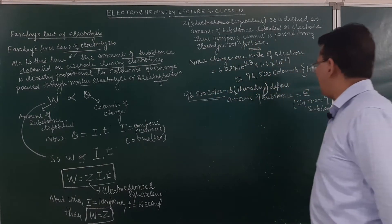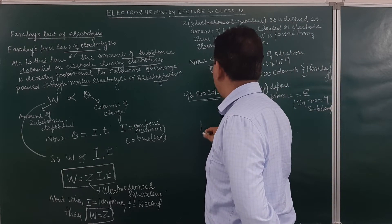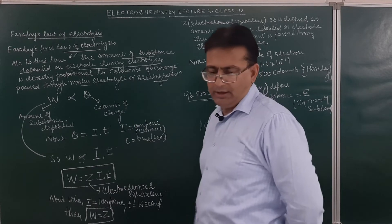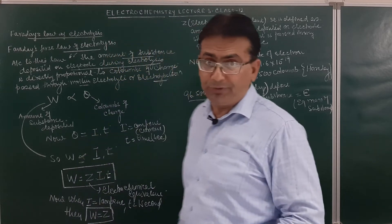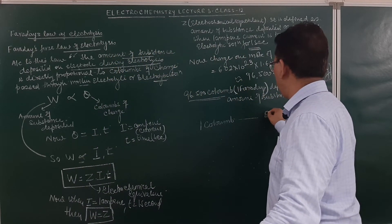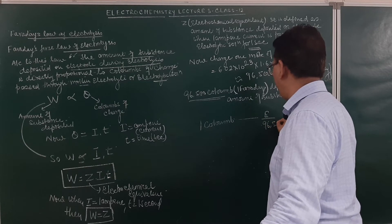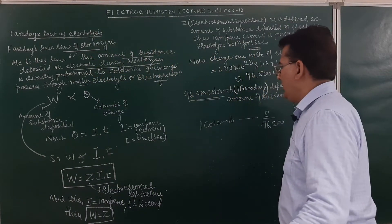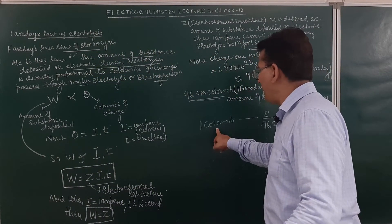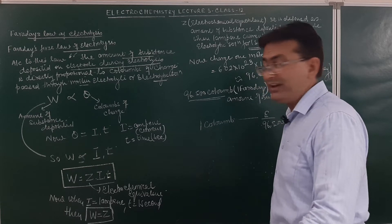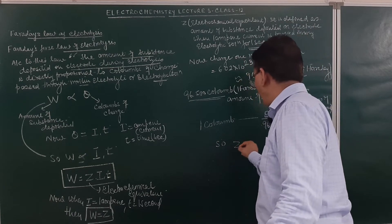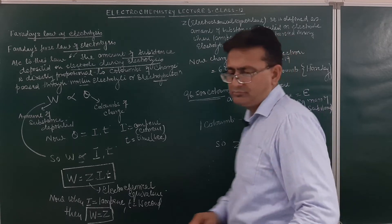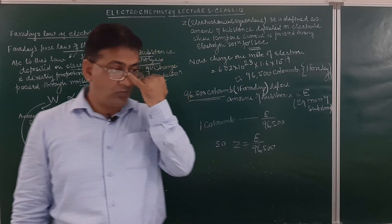Now if you pass 1 coulomb of charge, it will deposit E/96500 amount of substance. So Z = E/96500. If electrochemical equivalent is Z₁ and equivalent mass is E₁, then Z₁ = E₁/96500. Similarly Z₂ = E₂/96500.